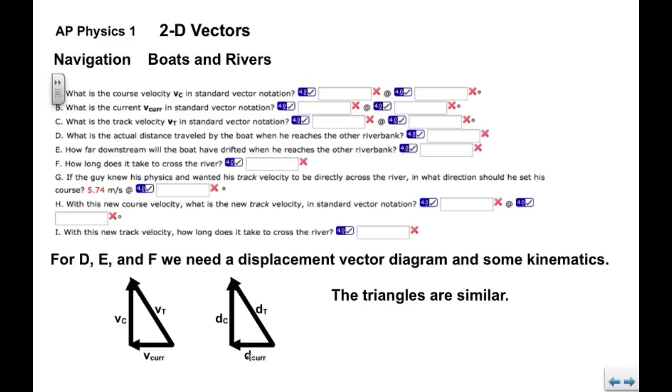I'm going to give the displacements the same subscripts. So we have a displacement that's associated with the course, straight across. We have a displacement that's associated with the current. We might call that the downstream drift. We also have a D sub T, or a displacement that's associated with the track. You might call this how far the boat actually travels. Now these are straight line velocities, so these triangles are similar. Whatever angle you get for the velocity diagram also applies to the displacement diagram.